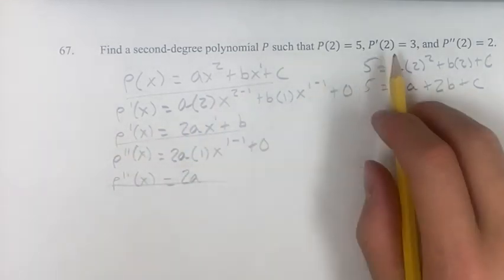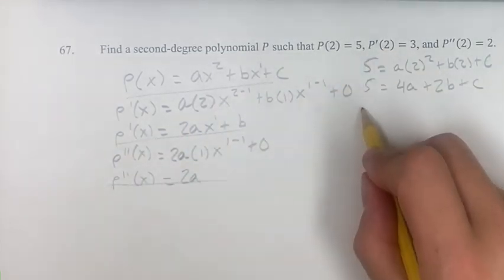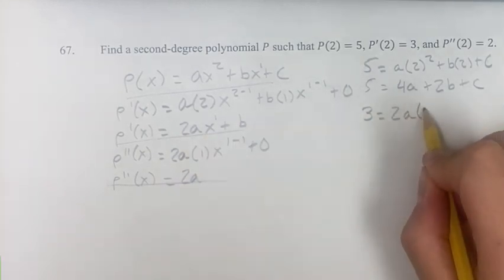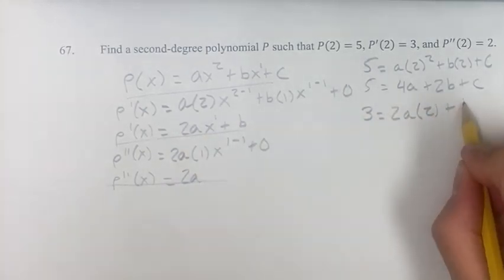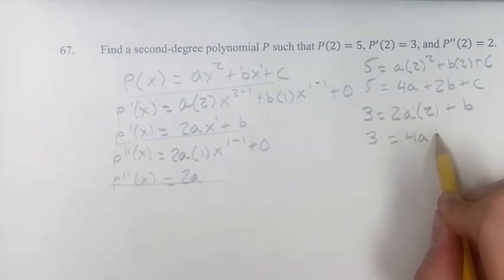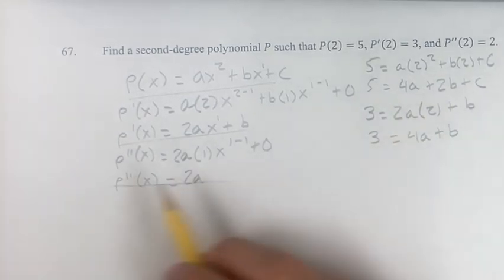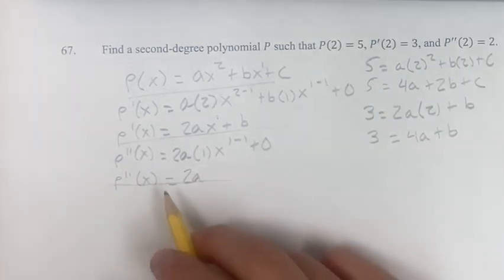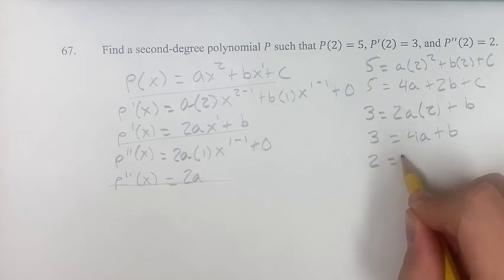For the derivative, we know that P prime of 2 is equal to 3, so 3 is equal to 2AX, which is 2, plus B. So 3 is equal to 2 times 2 is 4A, plus B. The second derivative, at 2, is equal to 2, so that we know 2 is equal to 2A.